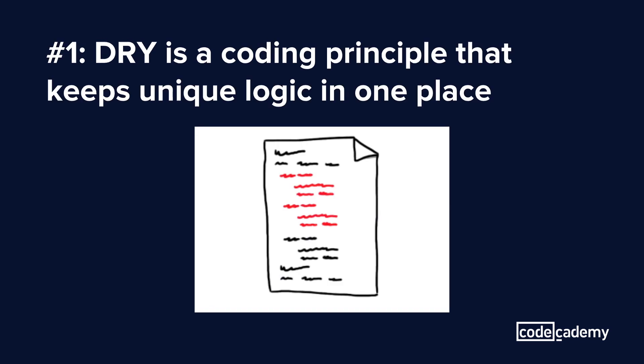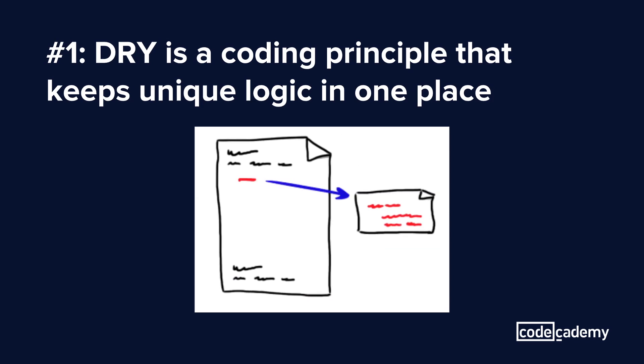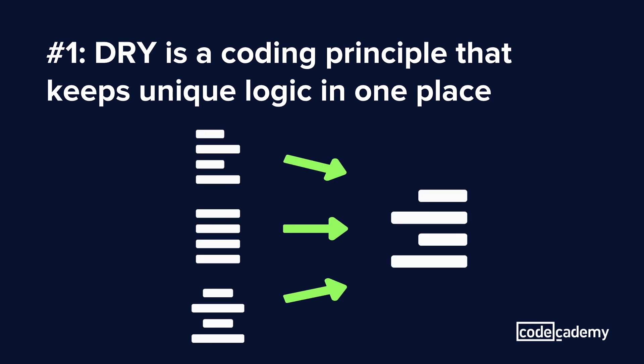When developers follow DRY, they will isolate a piece of logic and write the code for it in one place where it will be accessible to whatever else needs the logic. This means that any other place that needs the same logic can reuse that code without rewriting it.